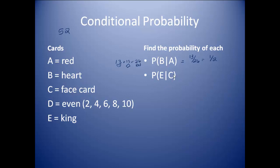Probability of E given C. On this one, we first figure out how many face cards there are — there are 12. I'm selecting from 12. Then the probability of getting a king: there are 4 kings out of these 12, so 4 out of 12 equals 1 third.